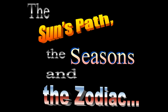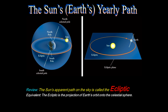For this presentation, I'd like to focus on the path of the sun against the background stars, and also the apparent path of the sun as viewed from Earth, the seasons, and the zodiac. The apparent path of the sun against the sky is called the ecliptic, and it's also the path that the Earth actually makes around the sun, forming what's called the ecliptic plane.